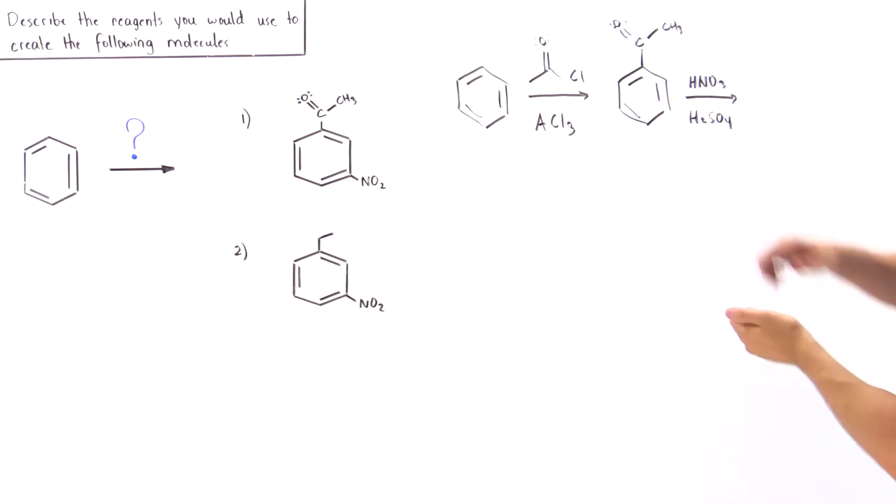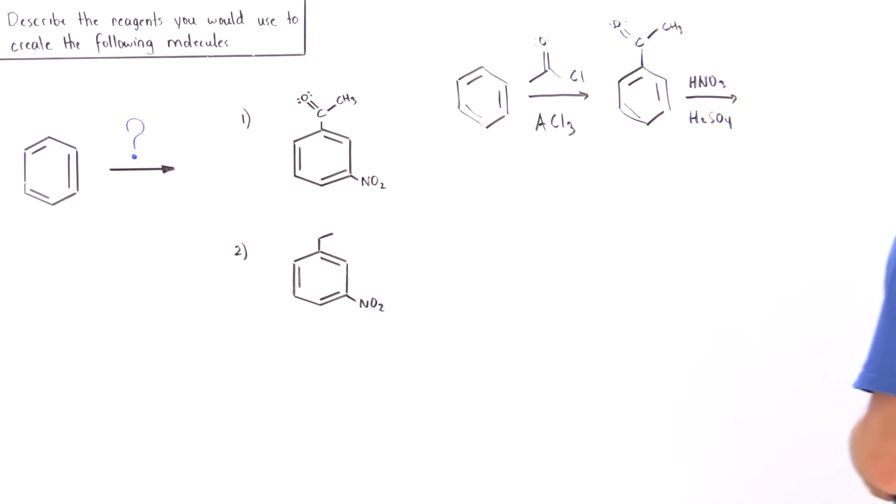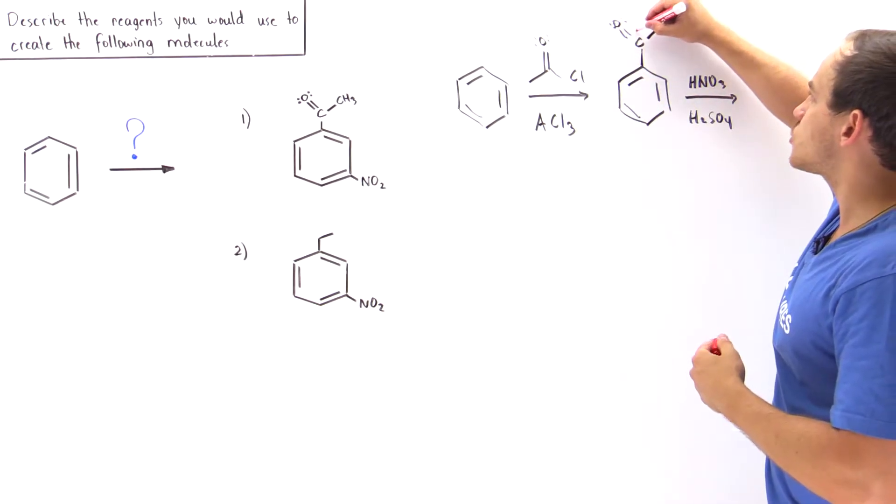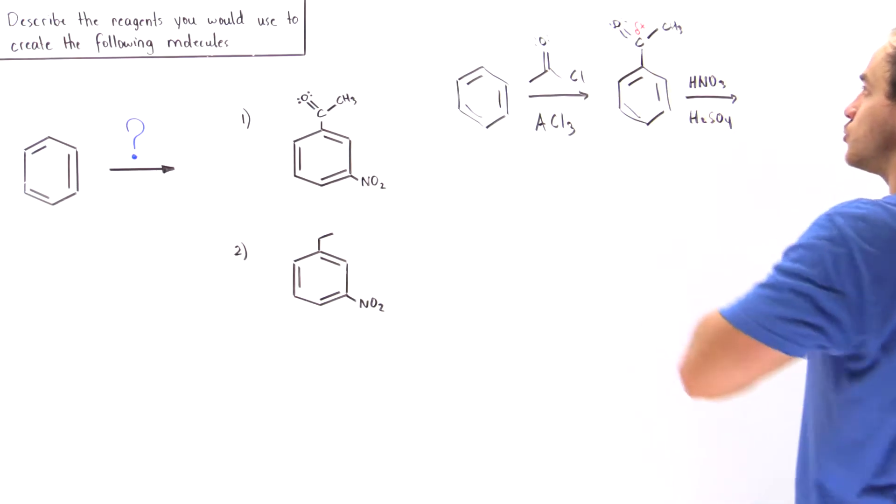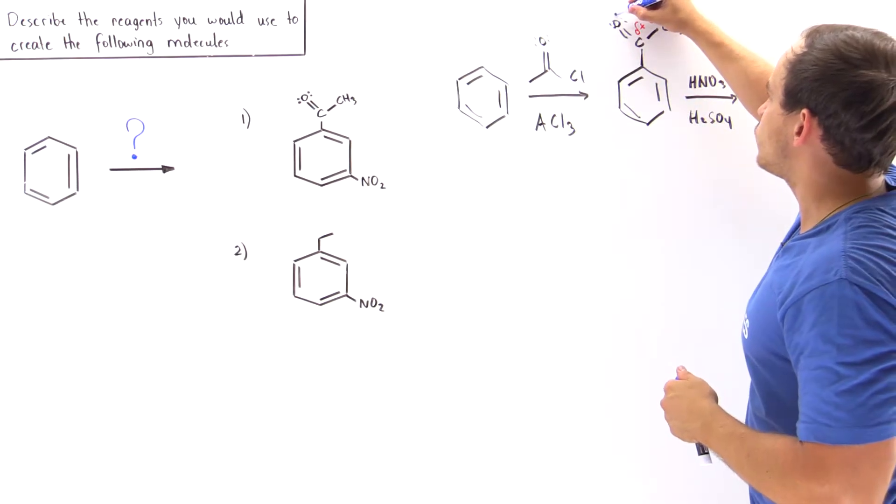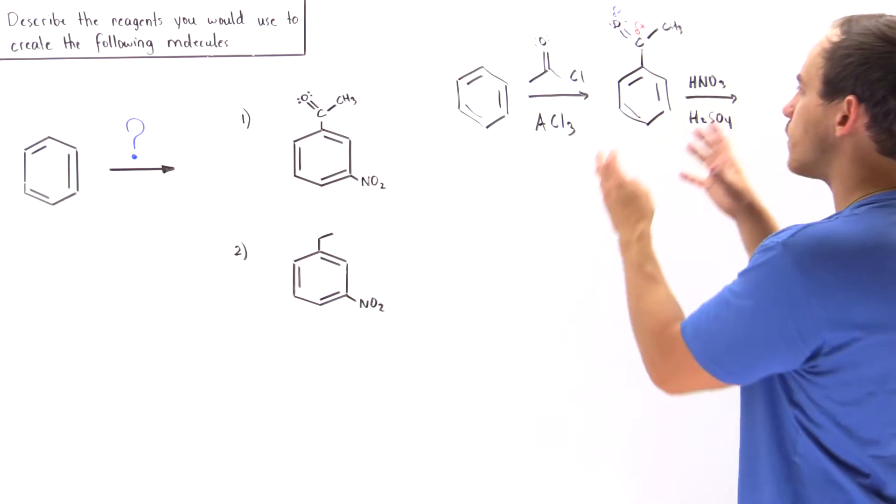Well, this group is meta-directing. That's because this carbon has a partial positive charge. Because this oxygen is more electronegative, it will pull away those electrons more readily, creating a partial positive charge on this carbon.